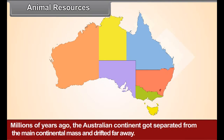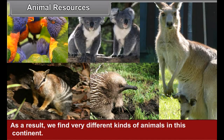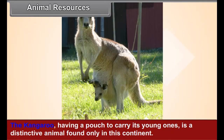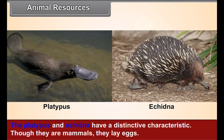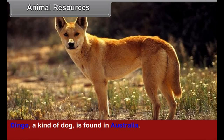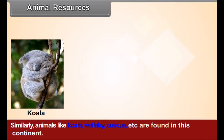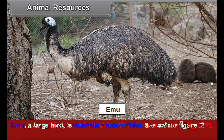Animal resources: Millions of years ago the Australian continent got separated from the main continental mass and drifted far away. As a result, we find very different kinds of animals in this continent. The kangaroo, having a pouch to carry its young ones, is a distinctive animal found only in this continent, feeding on shrubs and grasses. The platypus and echidna have a distinctive characteristic — though they are mammals, they lay eggs. The platypus has a duck-like beak. Dingo, a kind of dog, is also found in Australia. The emu, a large bird, is Australia's national bird.